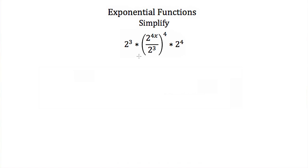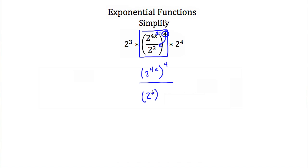Let's try using these laws of exponents to simplify this expression: 2 cubed times 2 to the 4x over 2 cubed, all to the 4th power, times 2 to the 4th power. The first thing I'm going to deal with is this center section. I'm going to take this 4 and distribute it to the numerator and denominator, giving 2 to the 4x to the 4th power over 2 cubed to the 4th power. When we have a power to a power, we multiply the exponents. So 4x times 4 gives 16x, or 2 to the 16x. 2 cubed to the 4th power gives 2 to the 12th.